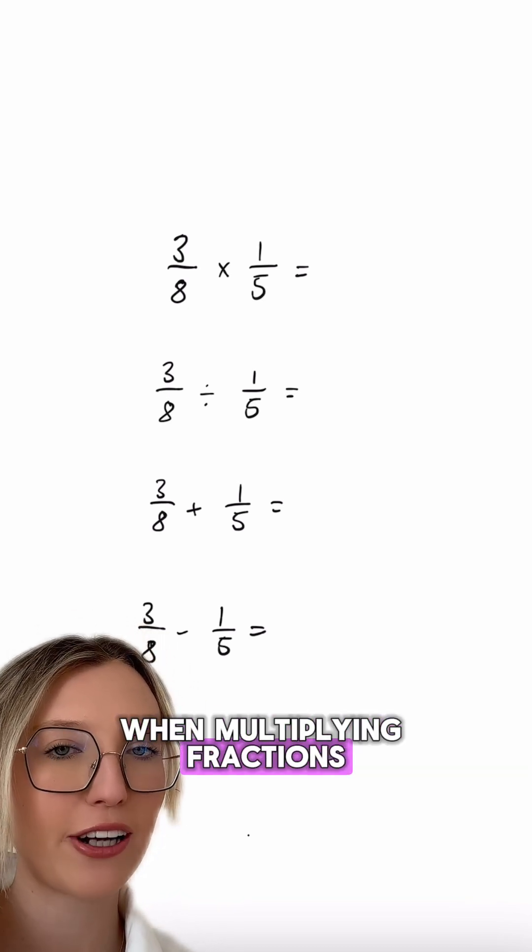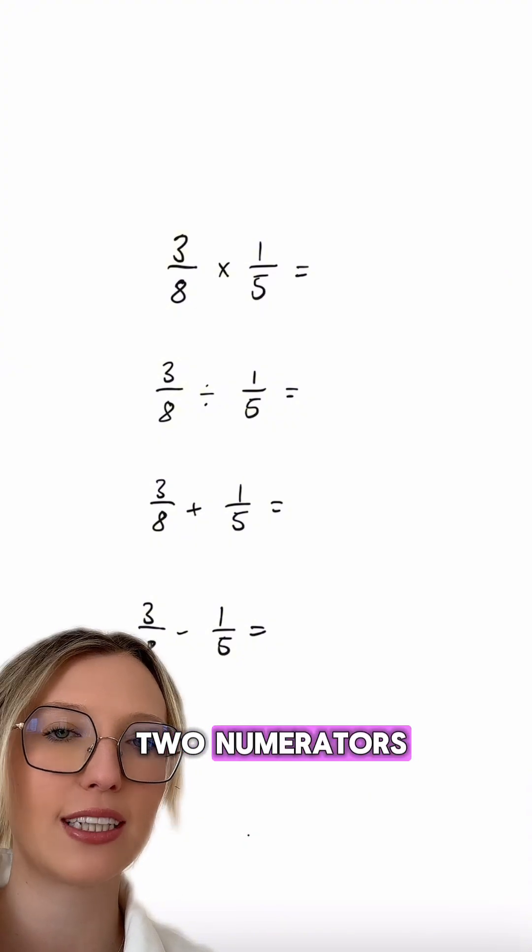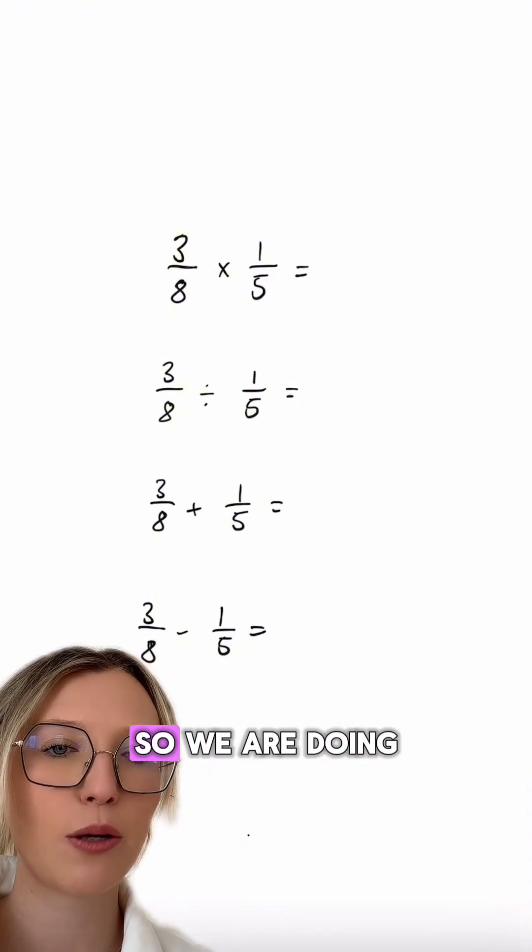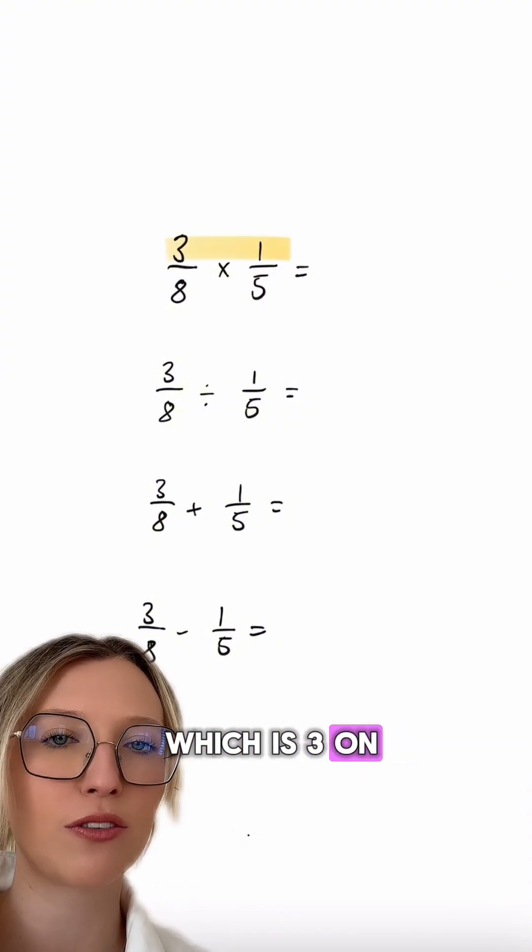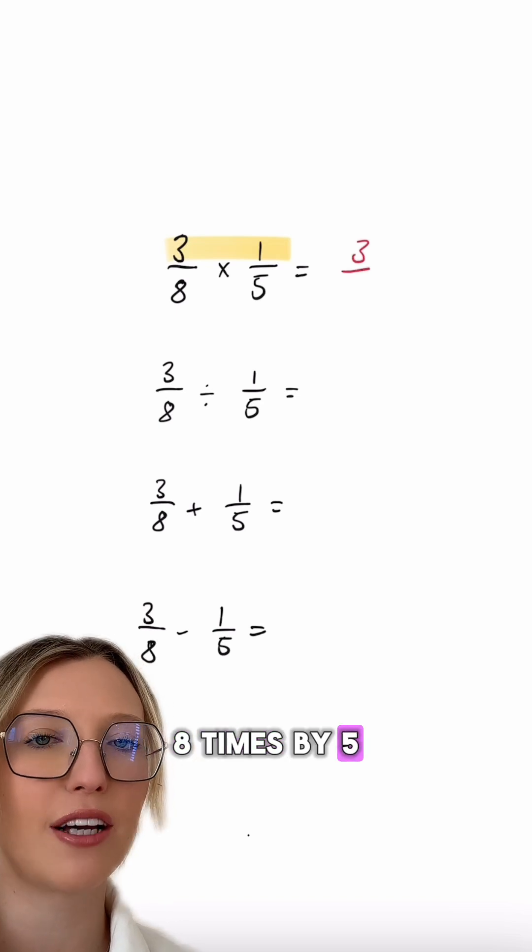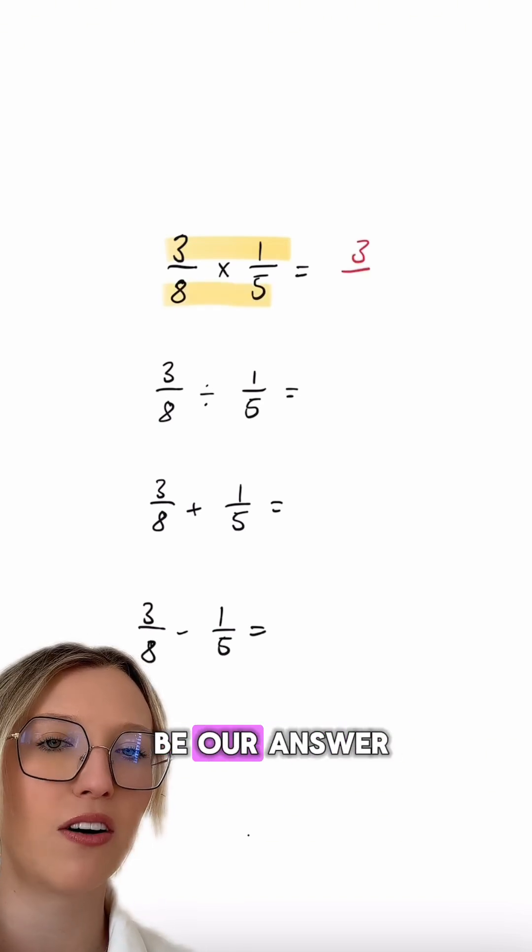When multiplying fractions, all you need to do is multiply the two numerators and then the two denominators. So we are doing 3 times by 1, which is 3 on the top, 8 times by 5, which is 40 on the bottom. 3 over 40 would be our answer.